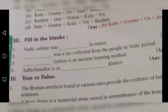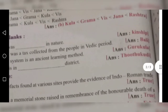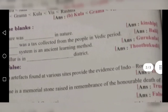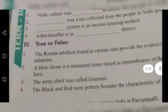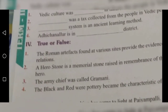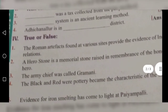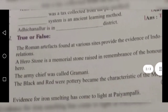Roman numeral 3: Fill in the blanks. First, Vedic culture was kinship in nature. Second, Bali (B-A-L-I) was a tax collected from the people in the Vedic period. Third, the Gurukula system is an ancient learning method. Fourth, Adichanallur is in Thoothukudi district.